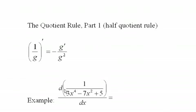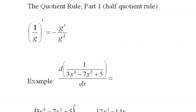So what I'd want to do is put a negative in front, square the bottom, and then take this polynomial and put the derivative of that polynomial on top, and that's just what I do.